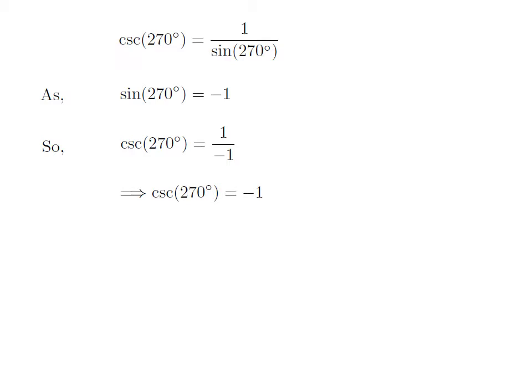As 1 divided by minus 1 is equal to minus 1, cosecant of 270 degrees is equal to minus 1.